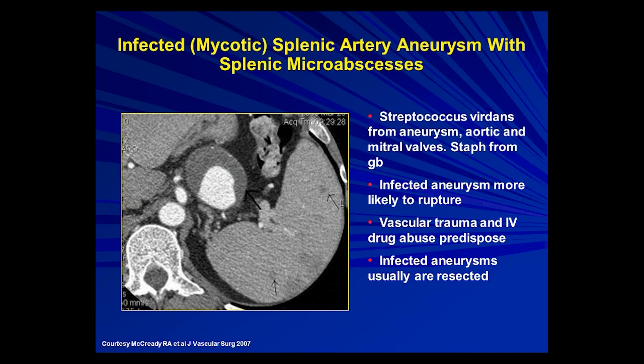Here's a splenic artery aneurysm with multiple hypodense lesions in the spleen in a patient with fever. They might have aortic or mitral valve disease — those are splenic abscesses, and that is an infected or mycotic aneurysm. These are usually treated with resection rather than simply giving IV antibiotics. Other predisposing causes would be vascular trauma and IV drug abuse.